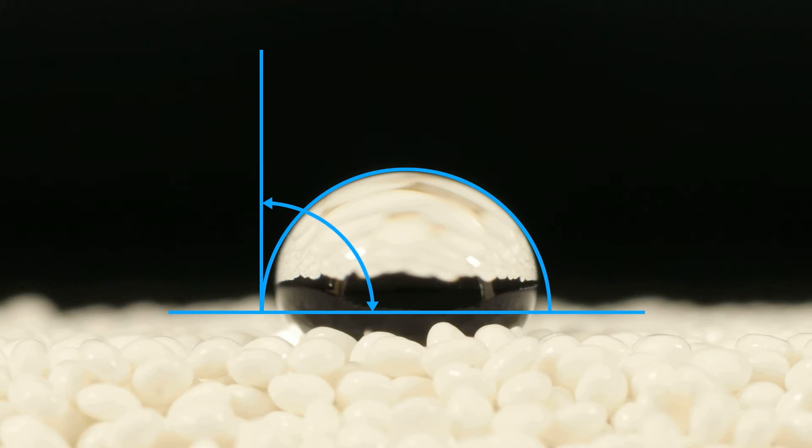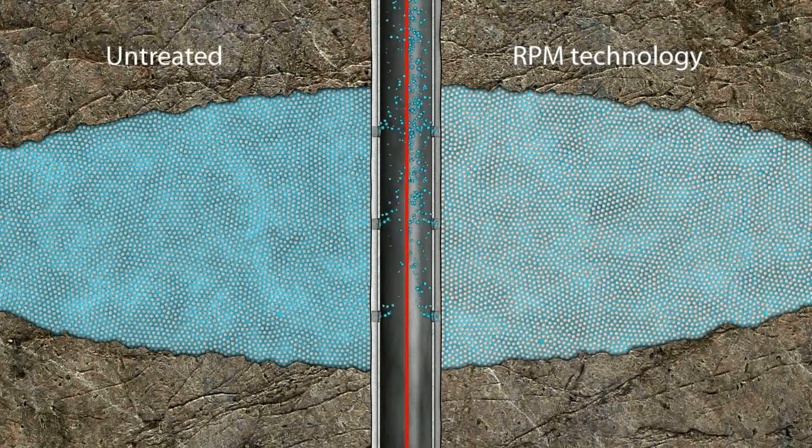RPM Technology alters the contact angle to approximately 90 degrees, modifying the wettability of the proppant to neutral, which virtually eliminates capillary forces. After stimulation,